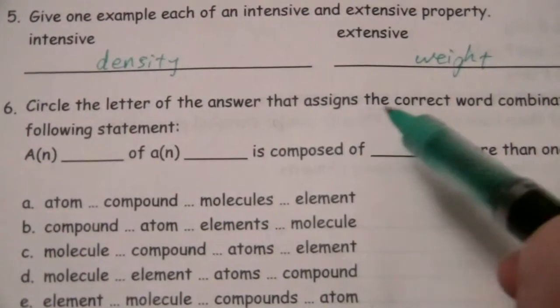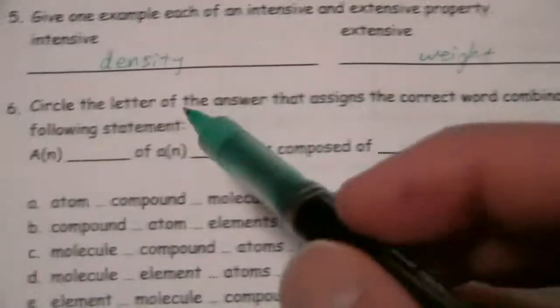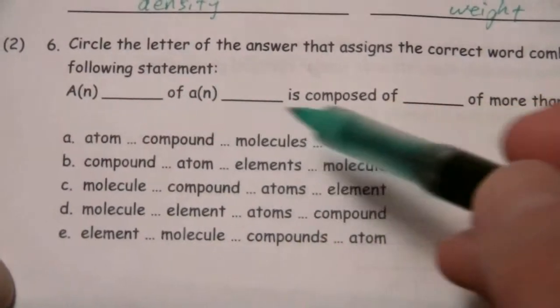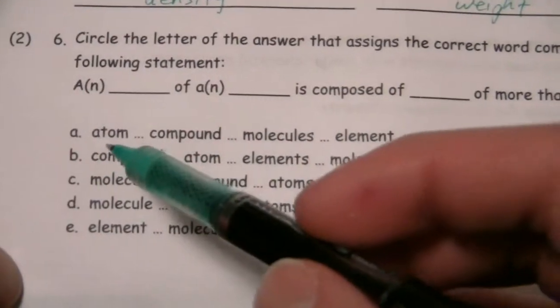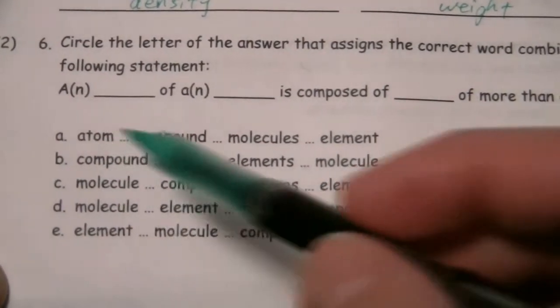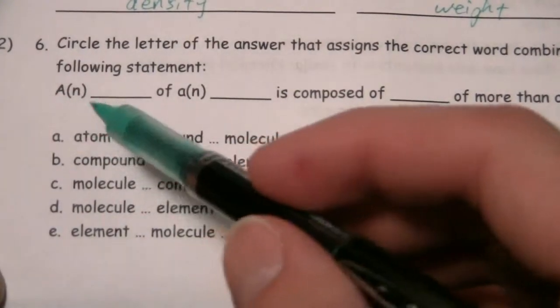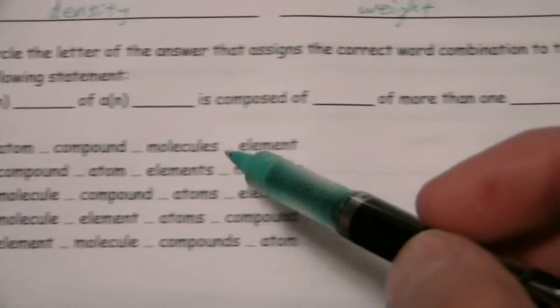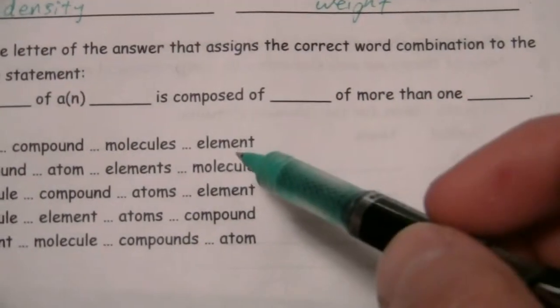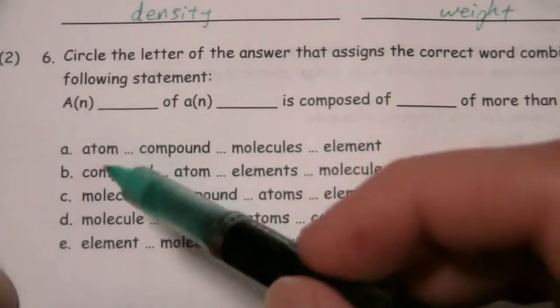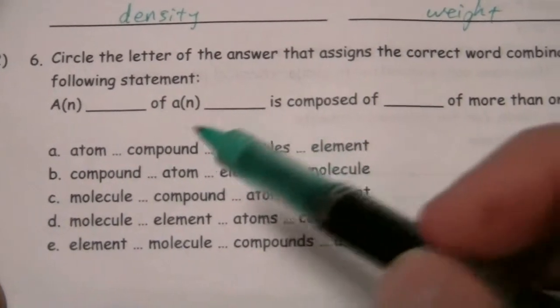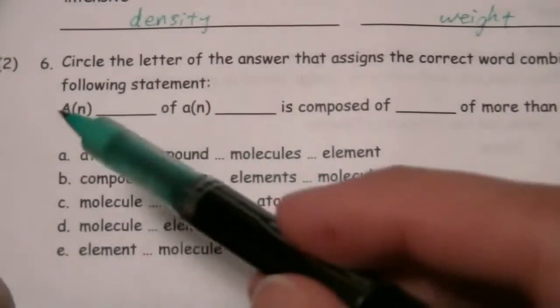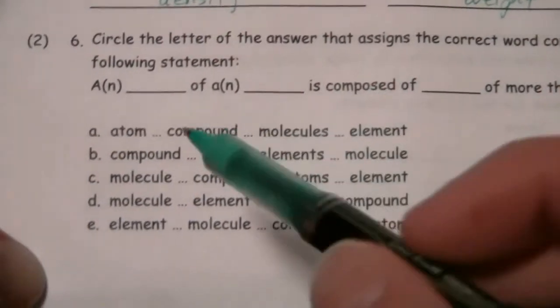All right, circle the letter of the answer that assigns the correct combination to the following statement. And I think the best way to approach this is just to look at the possibilities and see which one fits. So we're going to say an atom of a compound is composed of molecules of more than one element. Well, an atom of a compound, and then is composed of molecules - an atom is not composed of molecules, so that doesn't work.